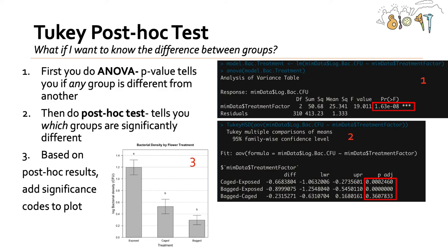The Tukey post hoc test tells you which groups are significantly different. The overall ANOVA P value tells you if any group is different from another, but then you need to do a post hoc test to say which groups are significantly different. That's the Tukey HSD test of the ANOVA. These pairwise P values say: does CAGE and EXPOSE differ, does BAG and EXPOSE differ, does BAG and CAGE differ? Based on those post hoc results you can add significant codes to plots.